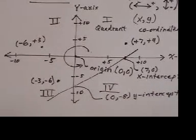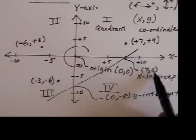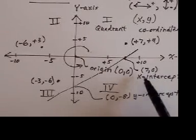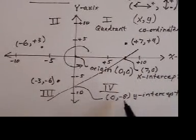You'll notice a little pattern there that every time we have an intercept, we have the number 0 involved. Up here, the 0 in the y-spot gives us the x-intercept. The 0 in the x-spot gives us the y-intercept.